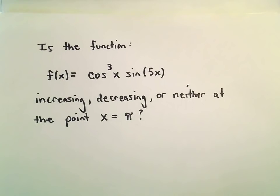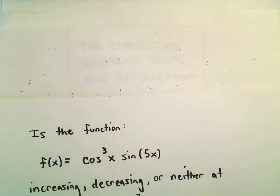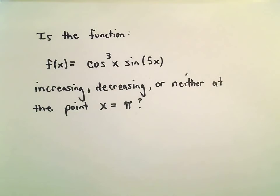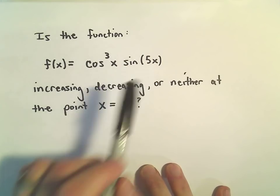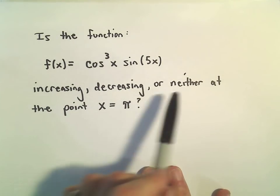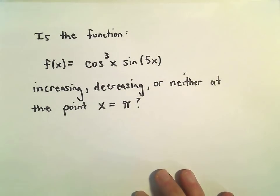Okay, so one last question here about this relationship between slope and optimization. We want to know, is the function cosine cubed of x times sine of 5x increasing, decreasing, or neither at the point x equals pi?